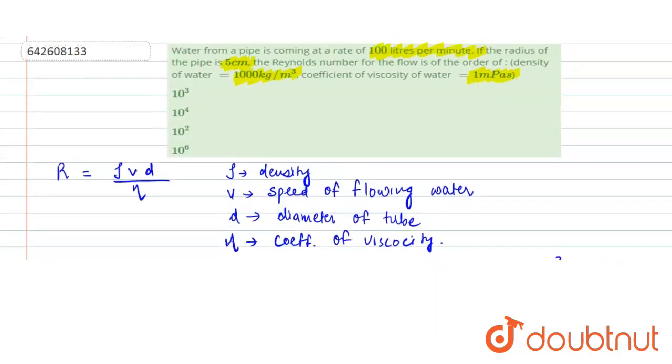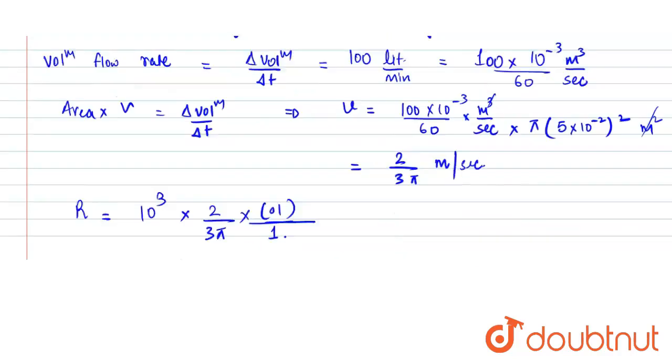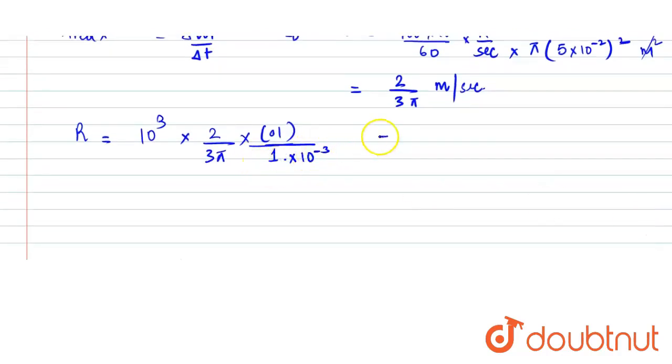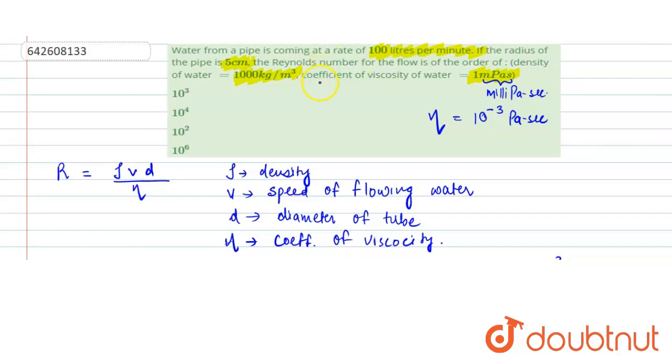η value is 1 millipascal second, which is written as 10⁻³ pascal second. So on solving this, we get approximately 2 × 10⁴. Since we had to find the order of the Reynolds number, we can choose option B as our right answer. I hope this helps you. Thank you.